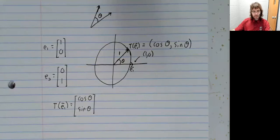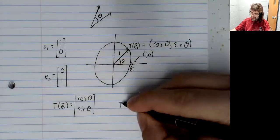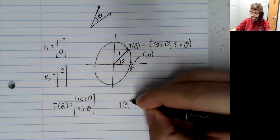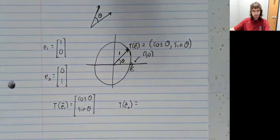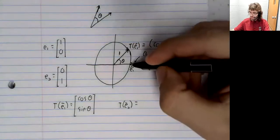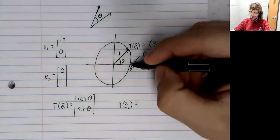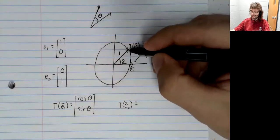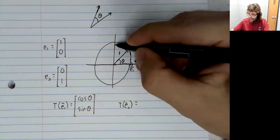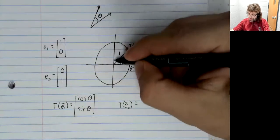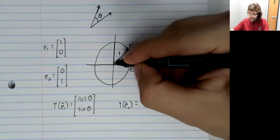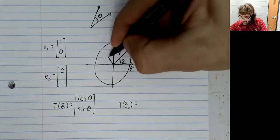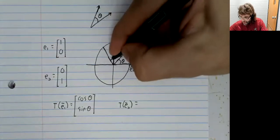What about T of e sub two? So we took this vector, we rotated it by theta, we got here. Now, we're taking this vector and we're rotating it by theta.